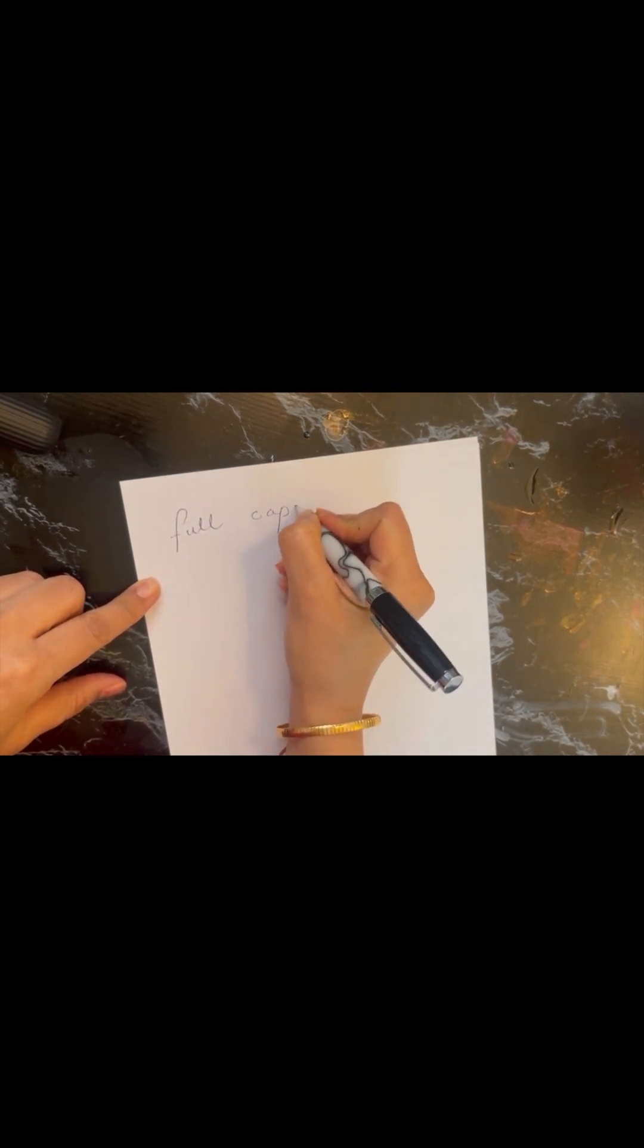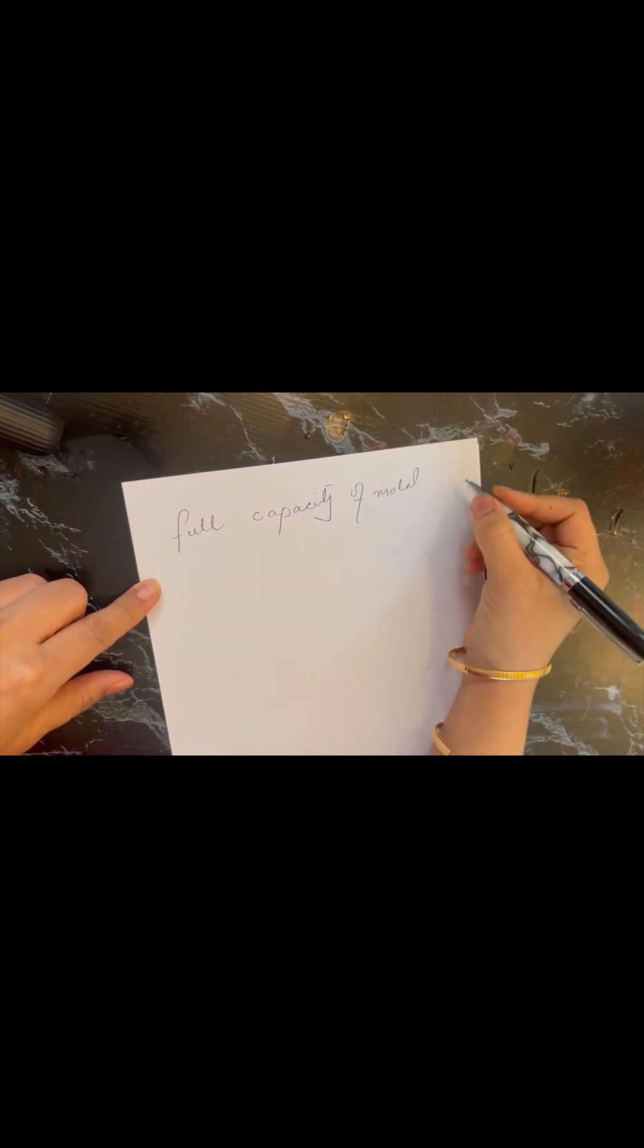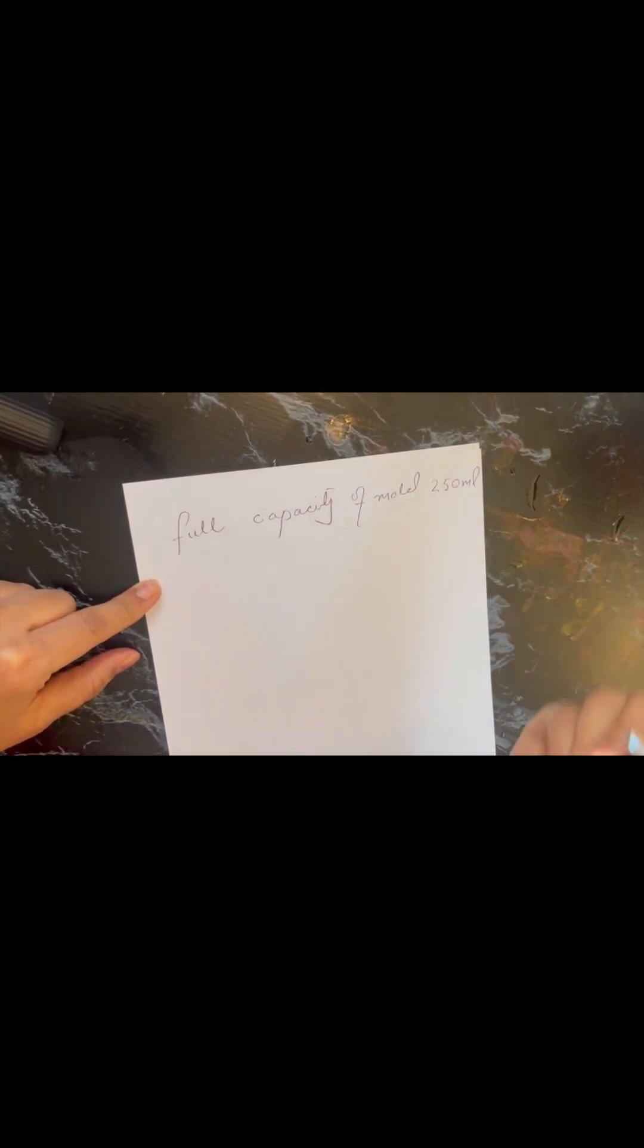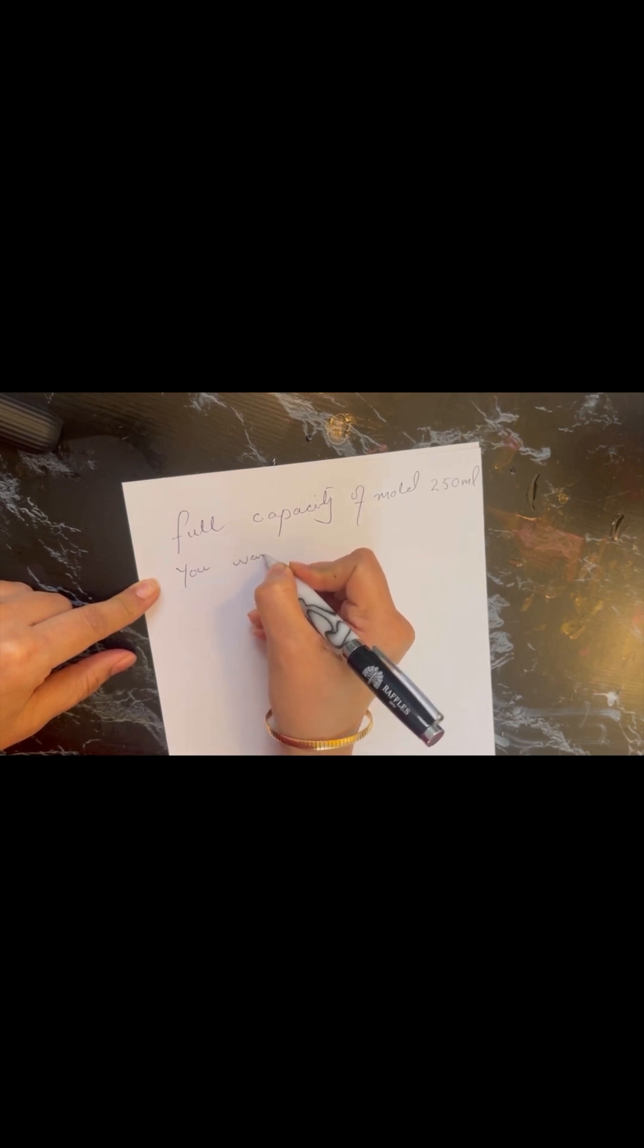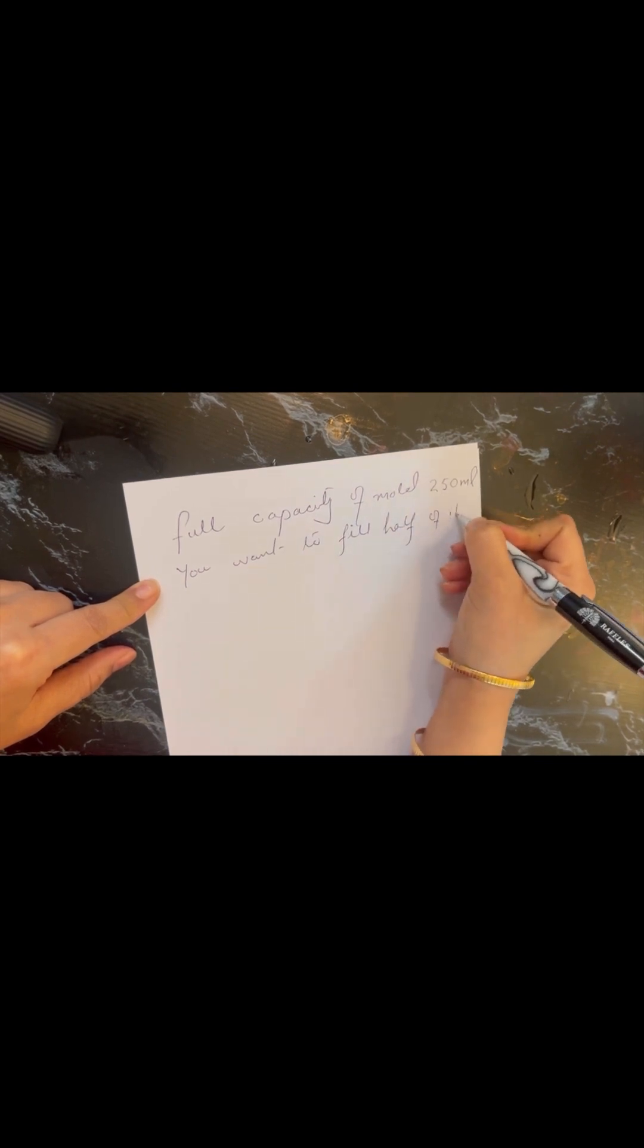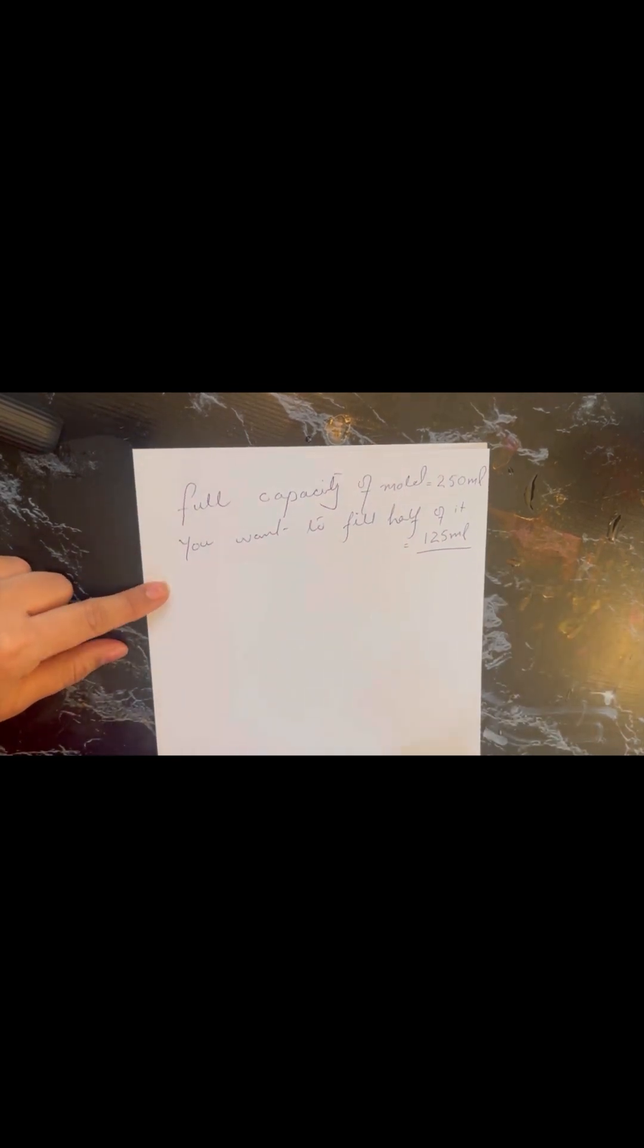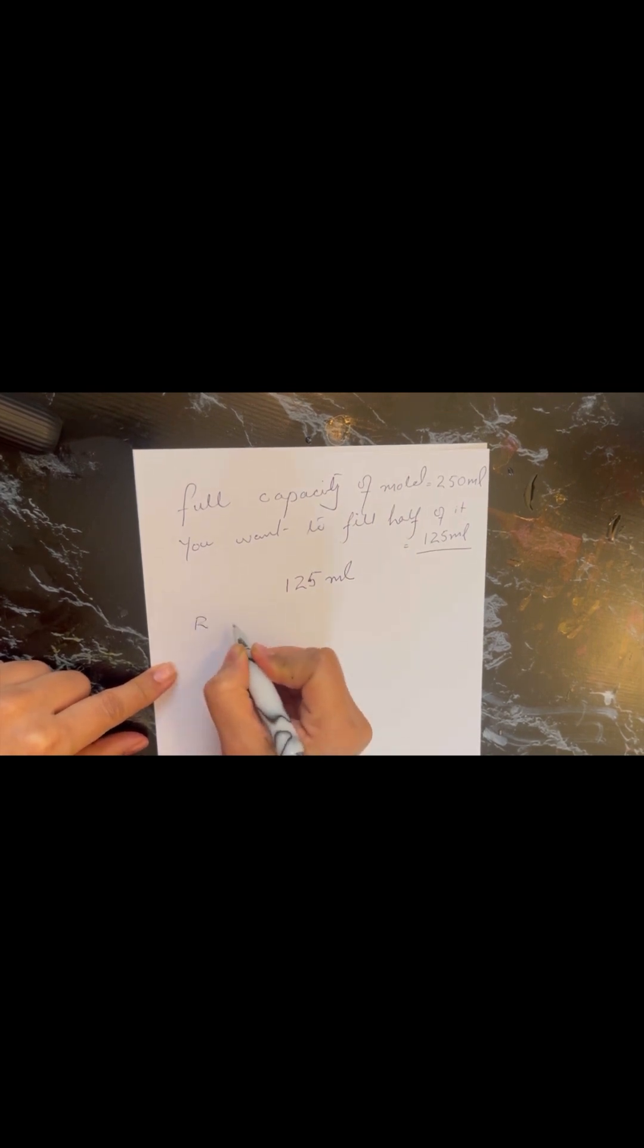Now I will show you how you can calculate your required volume without any mistake. It involves a little bit of maths. So let's say if the full capacity of your mold is 250 ml and you want to fill half of it, that reduces 250 ml to 125 ml. Now out of this 125 ml, how are you going to calculate how much resin you have to pour and how much of the hardener you are going to use? It's very easy, you just need to find out the parts out of the total.